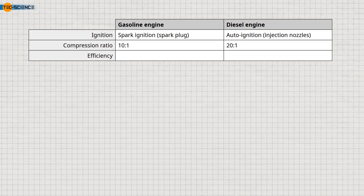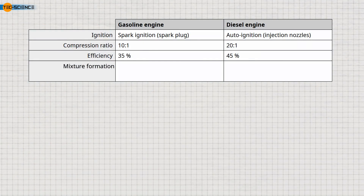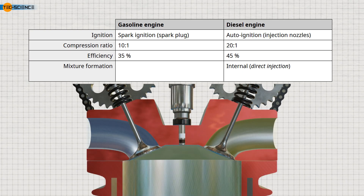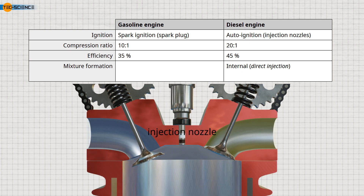The efficiency of gasoline engines is about 35%, while that of diesel engines is about 45%. Diesel engines create the necessary fuel-air mixture exclusively through internal mixture formation via injection. Instead of spark plugs, diesel engines have injectors that inject the fuel after compression, causing it to ignite.